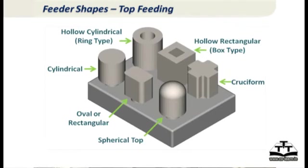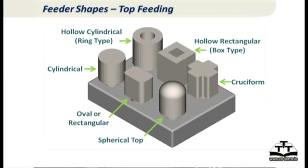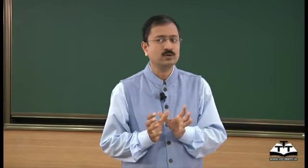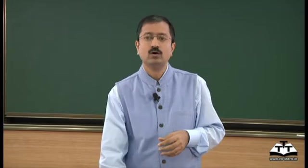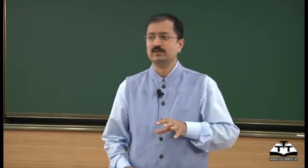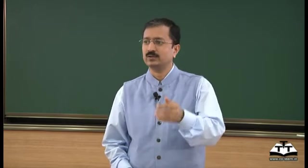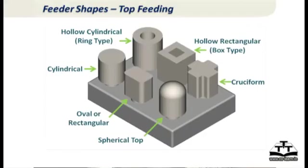What is actually used in practice are cylindrical shapes, oval or rectangular with generous fillets, elliptical, spherical top, and hollow shapes. A hollow feeder is not a good idea because it increases the heat transfer area, so feeder effectiveness is poor. A cruciform shape has some advantage because the sharp corners on the sides are hot, and cruciform shape can give slightly higher yield if designed carefully.